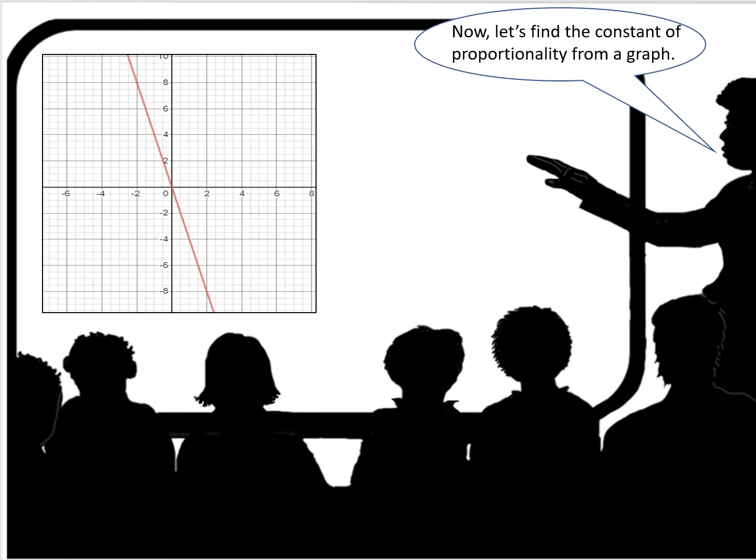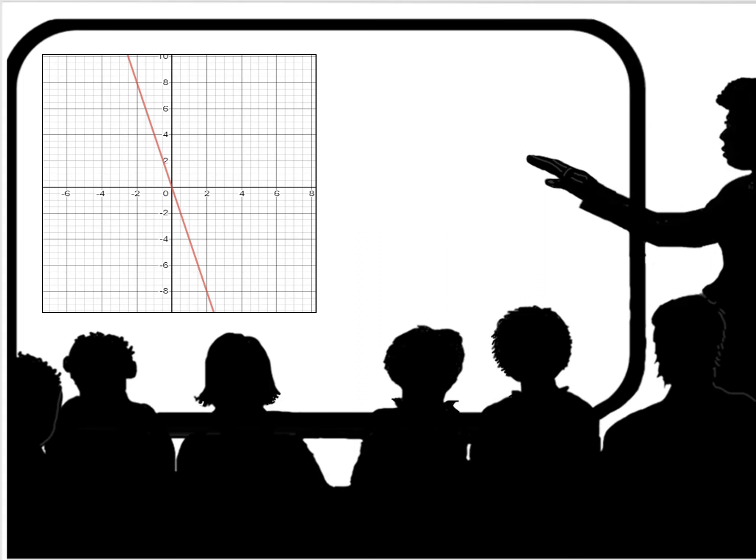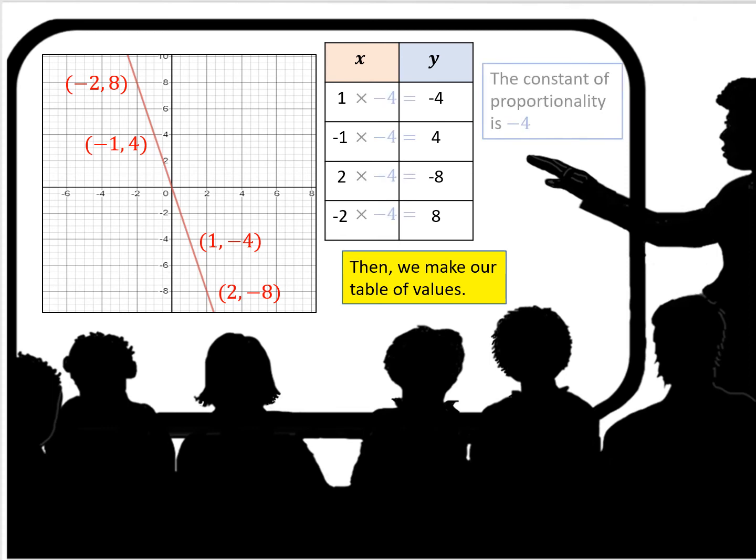Now let's find the constant of proportionality from a graph. The first thing we need to do is locate a couple of points on the line that cross both the x and y axis. So you find a couple of points that cross directly on those lines. And now we make our table.